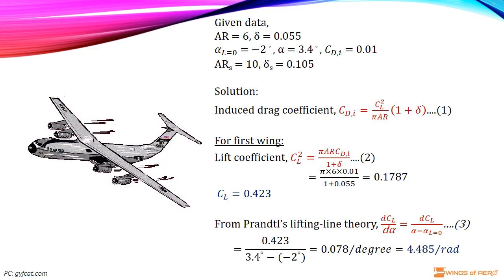Induced drag coefficient for a general wing can be written as CDI equals CL squared divided by pi times AR times 1 plus delta.